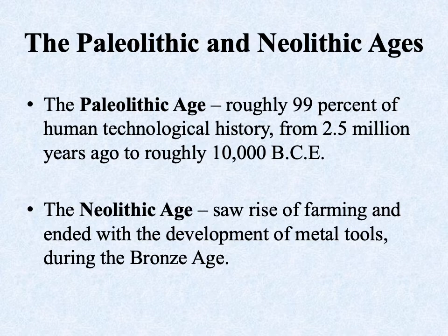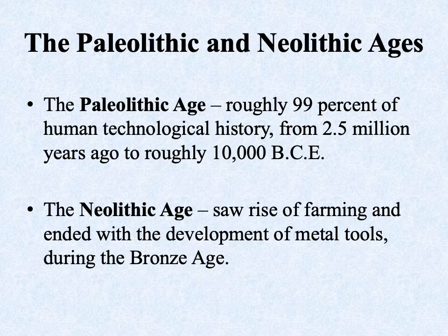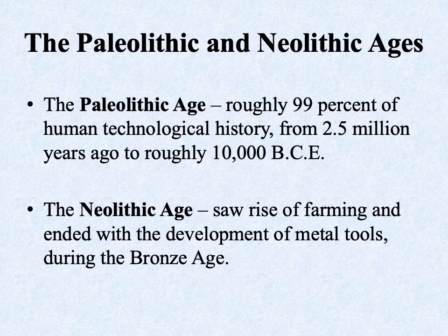When talking about the prehistoric period, we break it into two major eras based on technology: the Paleolithic age — literally 'old stone age' — and the Neolithic age, or 'new stone age.' We're talking primarily about stone tools. The Paleolithic age covers the bulk of human history — roughly 99 percent — from about 2.5 million years ago to roughly 10,000 BCE. It's fascinating how little changes for such a long stretch of time, from 2.5 million years ago to about 12,000 years ago.